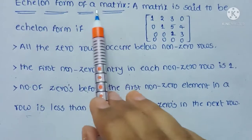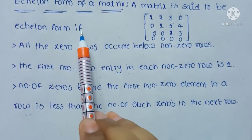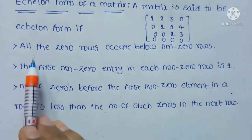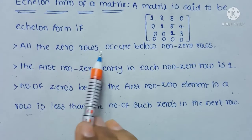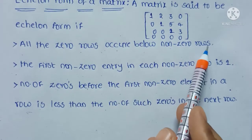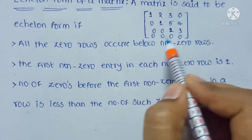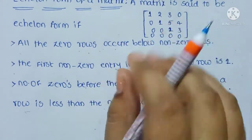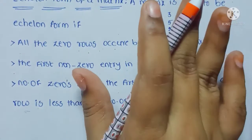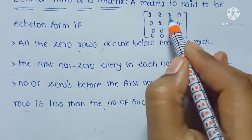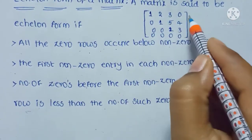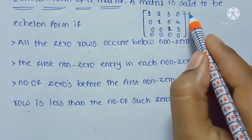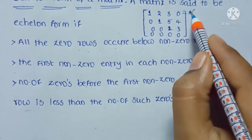A matrix is said to be an echelon form if it satisfies these three conditions. The first condition: all the zero rows occur below non-zero rows. What do you mean by zero rows? The row which contains all numbers as zero. Here, row 1 with 1, 2, 3, 0 is a non-zero row.